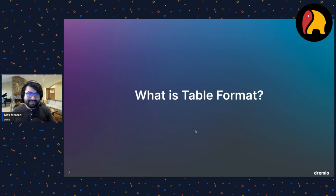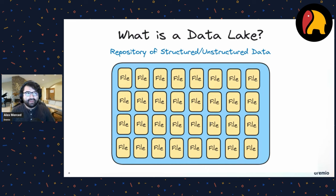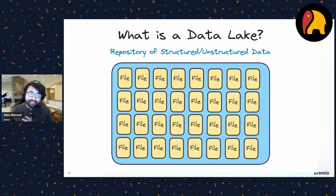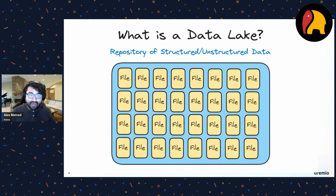Apache Iceberg is a table format, so we need to understand what that means. We have database systems for operational work — serving applications, adding and deleting records — and data warehouses for analytical workloads using columnar storage. These systems abstract away how data is stored, what metadata is tracked, and how it's processed — we just write SQL and query it.